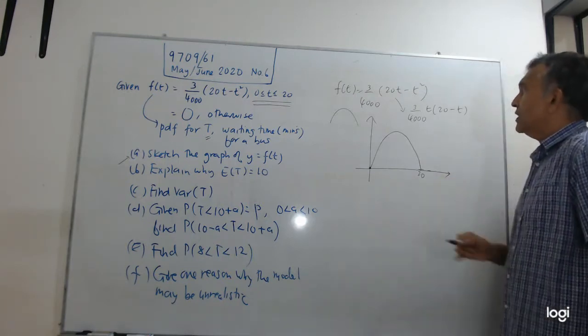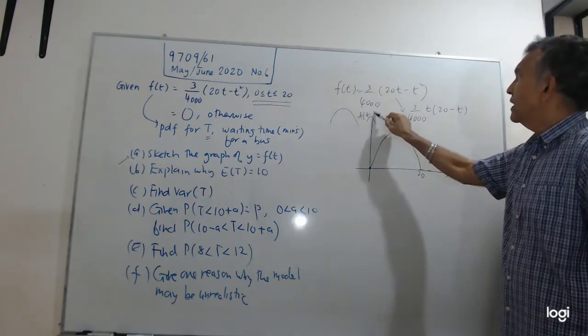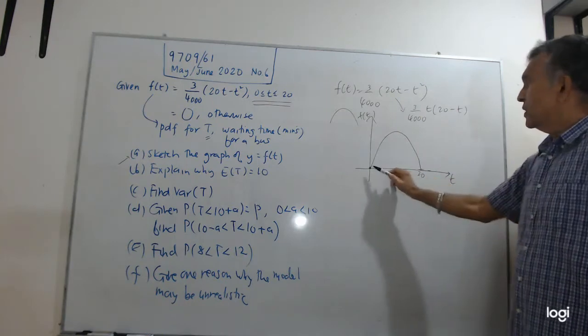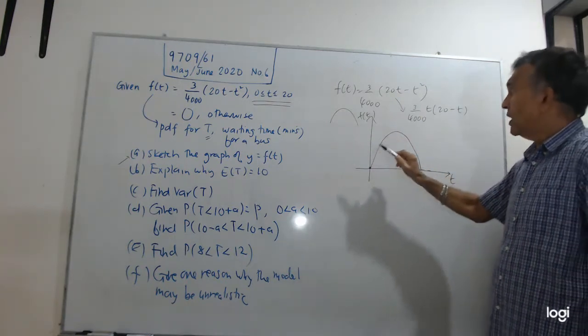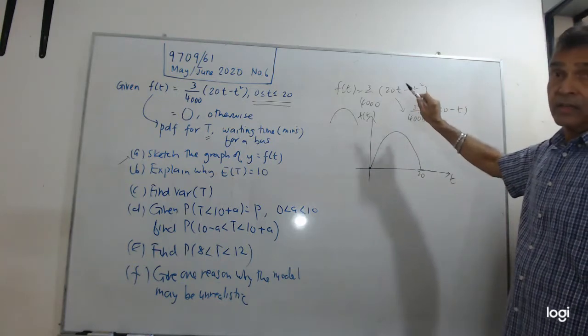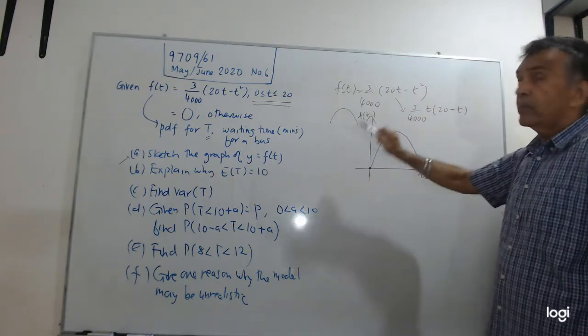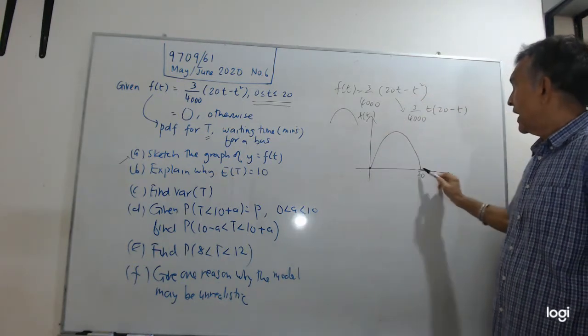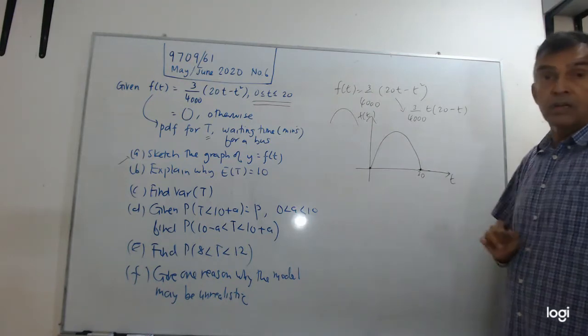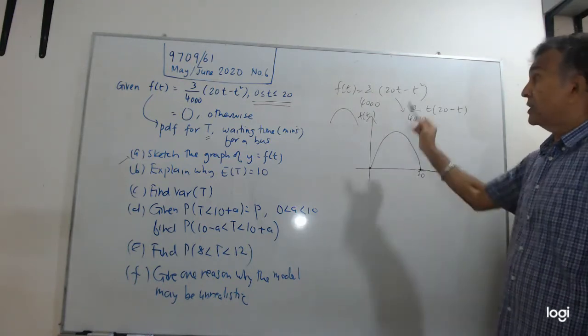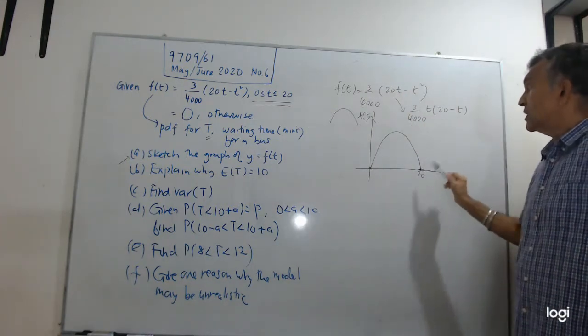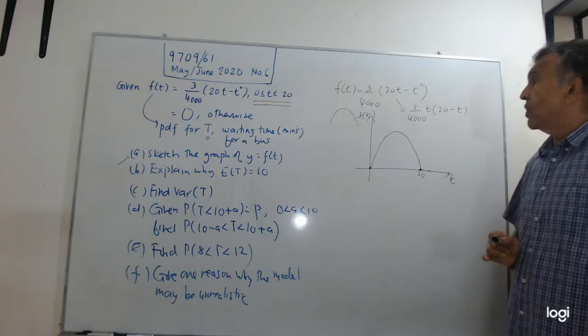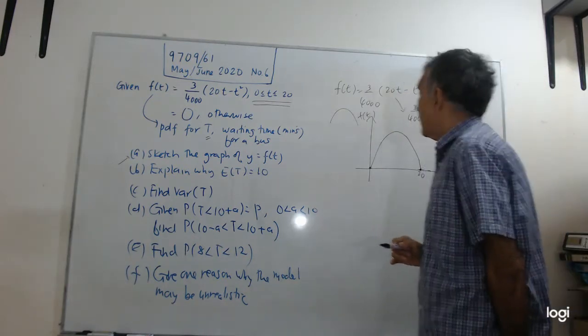Okay, so this is f(T) against T. So a few things. One, before we leave this, one, you recognize that it is a quadratic curve. Two, make sure it passes through the origin. And don't extend the curve beyond 20, because they tell you very clearly, T lies between 0 and 20. So this is it. And this is your answer to part A.